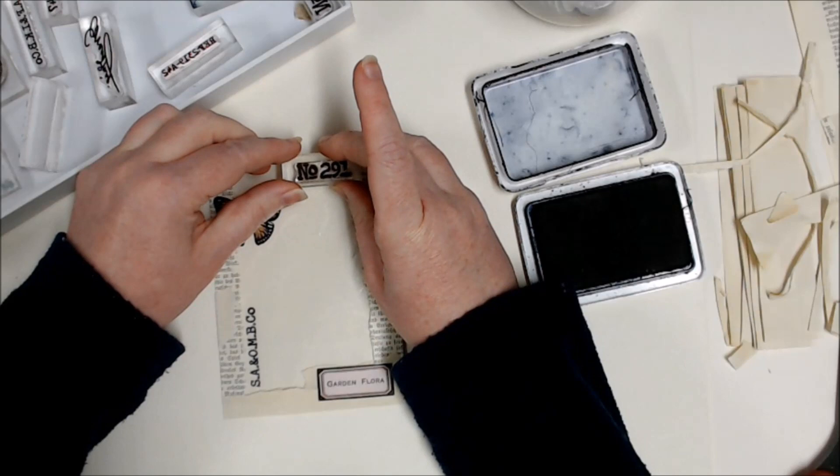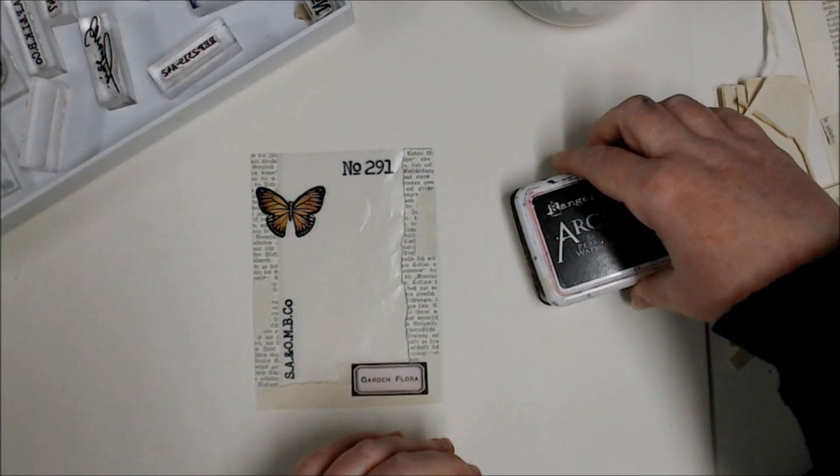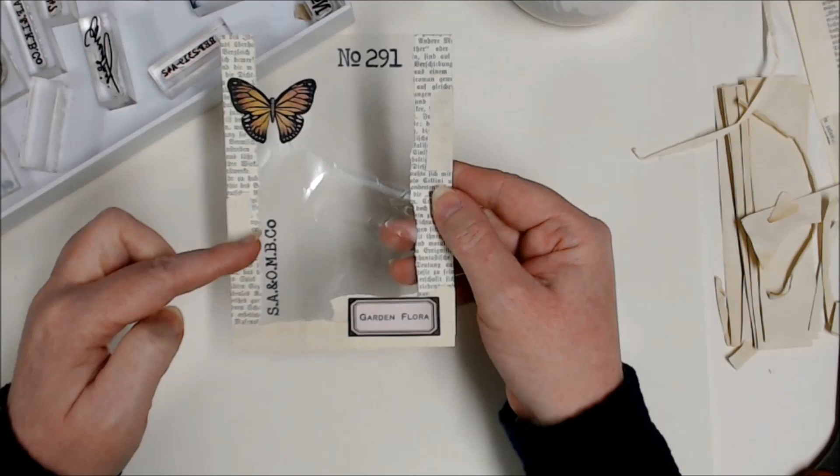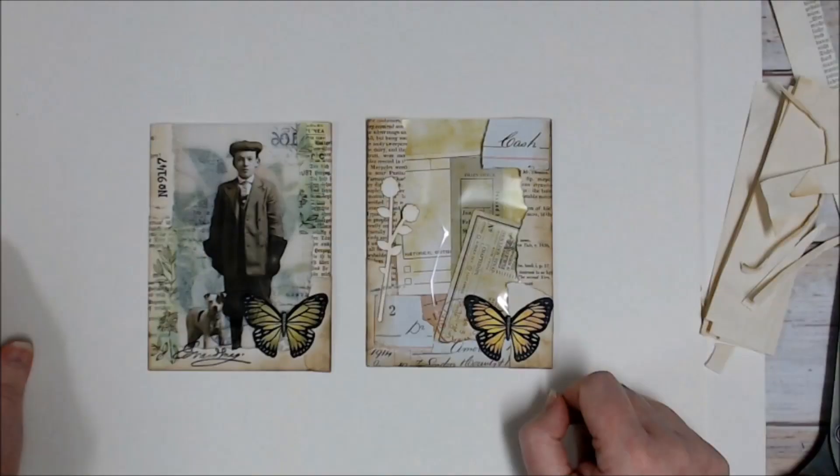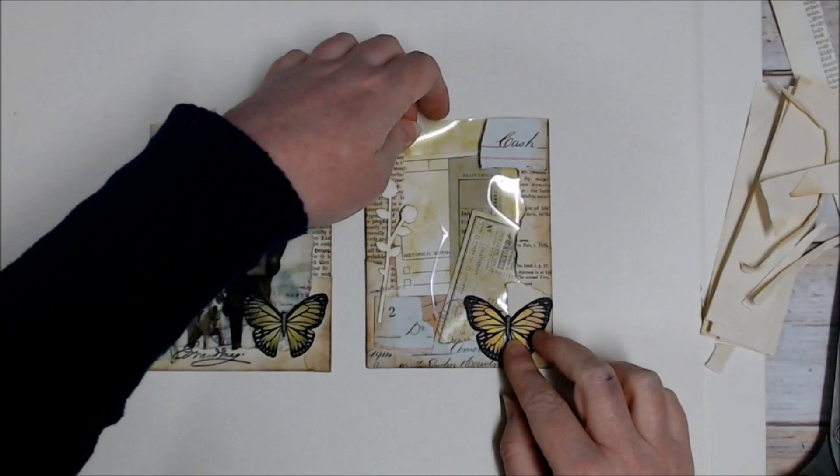And then maybe I'll put this number up here. So once my stamping is dry, you can go and ink around the edges if you like. And then your pocket's ready to fill up however you choose.